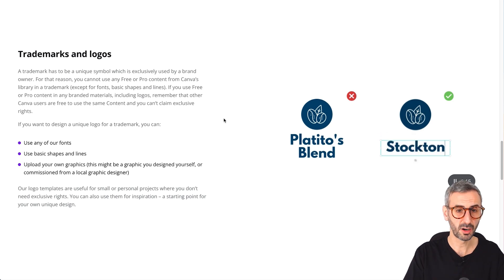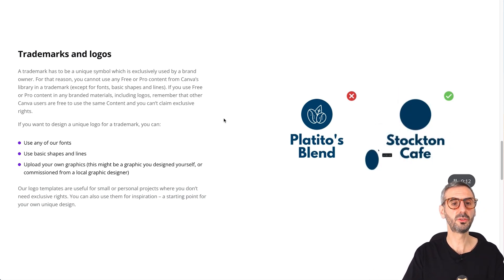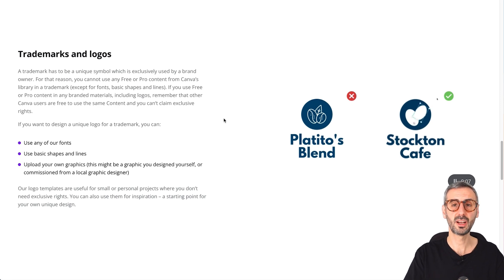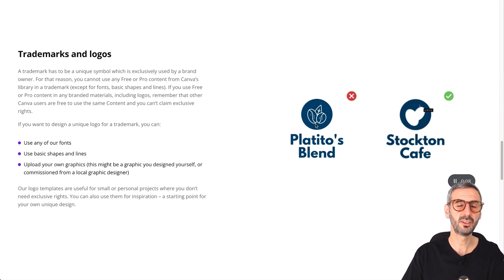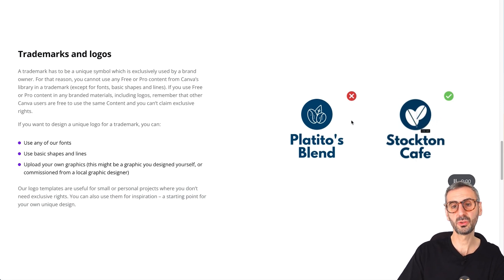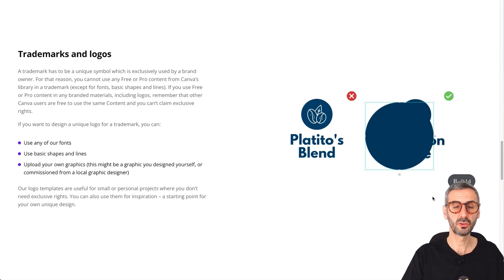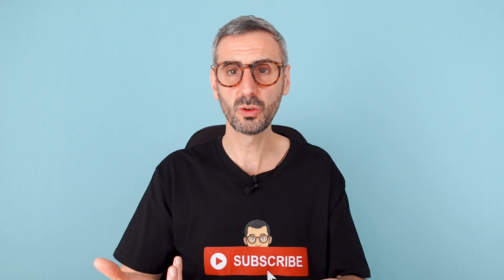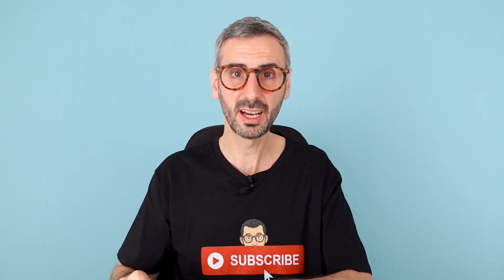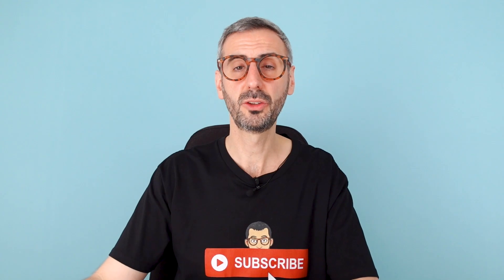If you decide to trademark, you can still use Canva, but you can use any font that is allowed in the Canva library, shapes and lines, and you can upload your own graphics. There's a little GIF animation showing that if you decide to trademark your logo, you cannot use, for example, coffee beans from the Canva library. What you can do is use shapes and lines to recreate a similar shape. That would be okay. So if you are going to trademark, you cannot use elements — you can use shapes, lines, and fonts — but otherwise you are pretty much free to use anything you like.